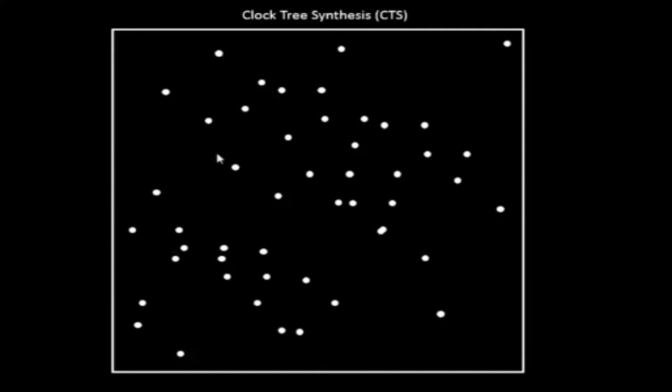So on this chip, you have these clock endpoints, all these white spots that you see. These are nothing but your flip-flops, the clock pins of the flip-flops. All these white spots are the clock pins of the flip-flops and these clock pins are spread around the complete chip.